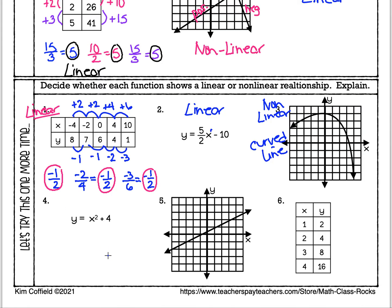For the equation in number four, I'm looking at my X and checking the exponent. This one has an exponent of 2. Because the exponent is 2 and it doesn't have a plain X or X to the first power, this is nonlinear. If we graphed it, it would have a curve.